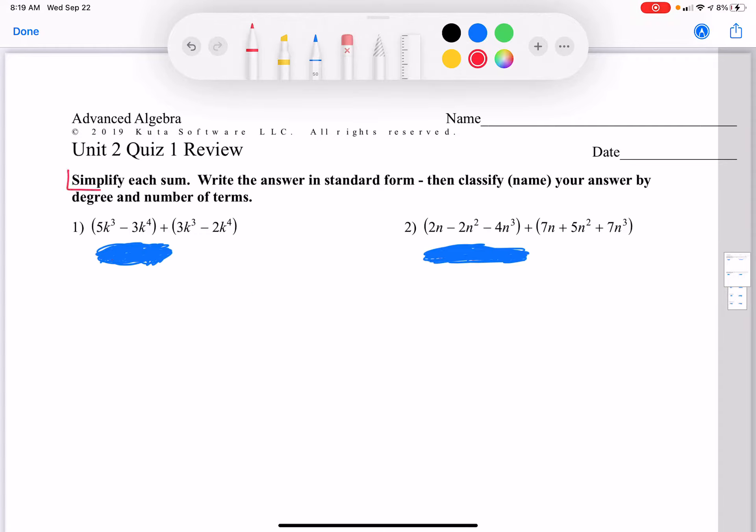So let's look at this. Step 1, simplify each sum. Let's do that for both of these first. This is an addition problem. We are not going to multiply. We're not going to FOIL. We're just going to add like terms. So 5k cubed plus 3k cubed, you just add the 5 and the 3, 8k cubed.